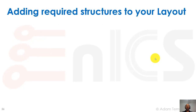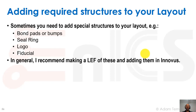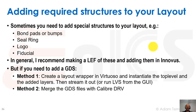When adding required structures to your layout, sometimes you need to add special structures such as bond pads or bumps, seal rings, logos, fiducials — other types of structures that aren't actual logical structures but are physical structures that we need to put in before tape out. The recommendation is to make a list of these and add them in Innovus, which will take care of merging into the GDS.